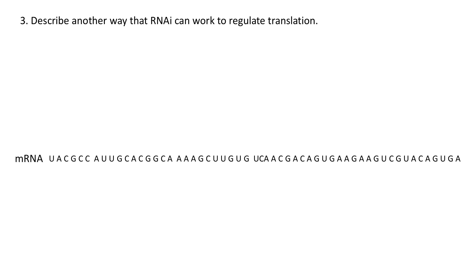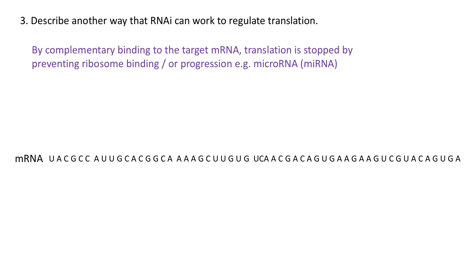Now on to the final question. The alternative way that RNAi can work to prevent translation is simply by blocking ribosome binding and progression. For instance, in this example, we've got a molecule of RNA — an example might be microRNA, which is produced by animal cells to regulate mRNA expression and translation.